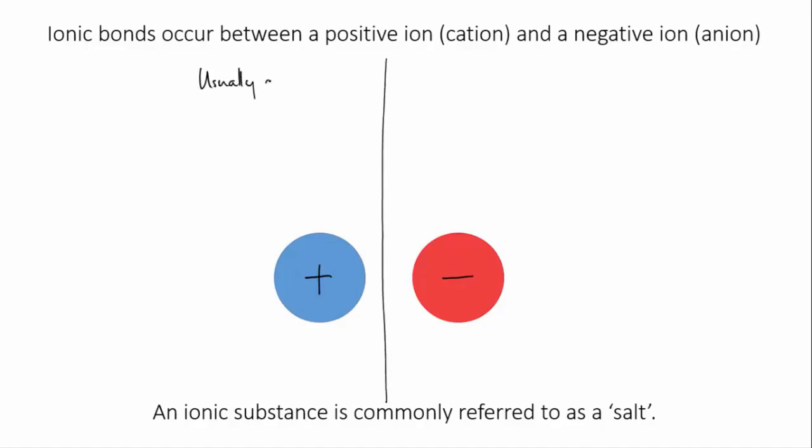The cation is usually a metallic ion. A common exception, though, is the polyatomic ion ammonium, which is good to know. The anion is a non-metal and could be a polyatomic ion also, such as sulfate or nitrate.